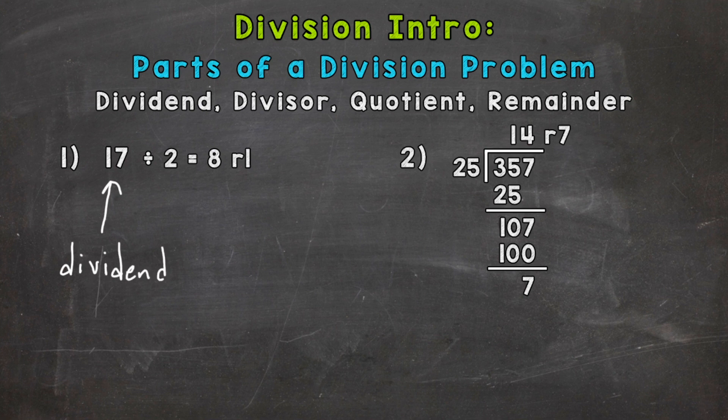Now it's being split into two equal groups, so it's being divided by 2. So whatever we are dividing by, that is our divisor.